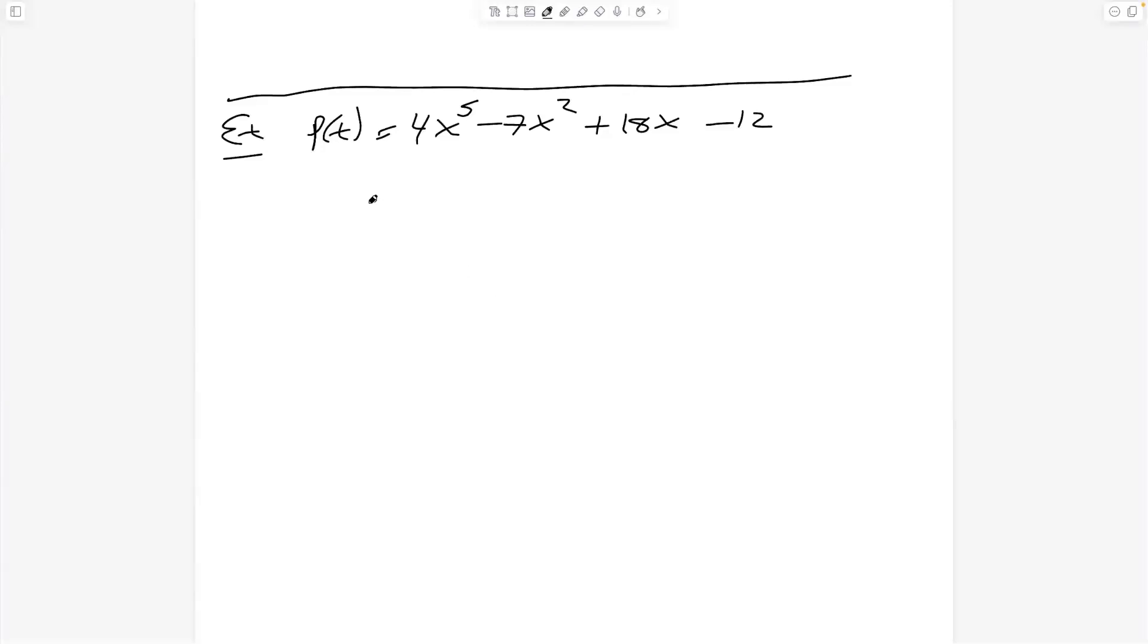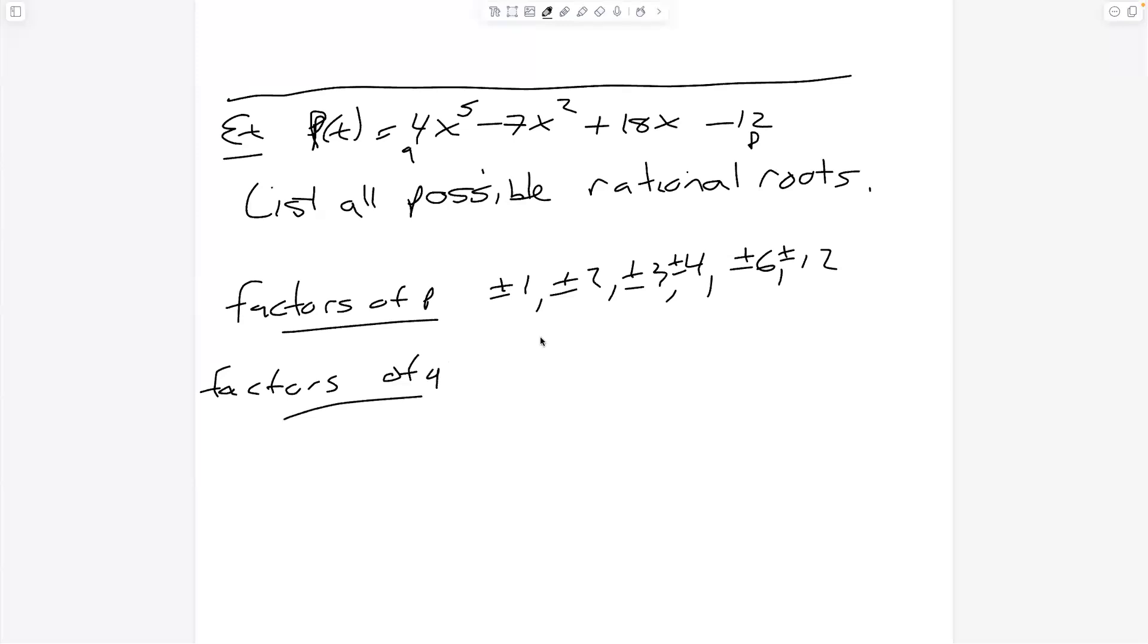Okay, another example. We've got some polynomial here. I called it capital P of X. I just want to list all the possible rational roots. We're not going to check them all right here, but let's list them all out. So my little p, my little q, factors of p. So what goes into negative 12? We've got one. Remember, we also have to list all our pluses and minuses. Two, three, four, six, and 12. Factors of q, the leading coefficient. What goes into four? We've got one, two, and four.